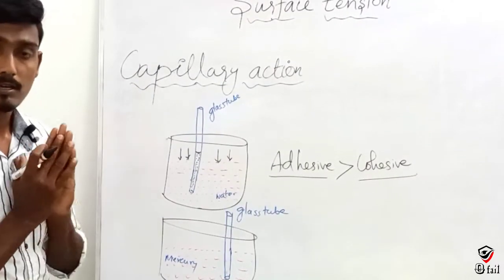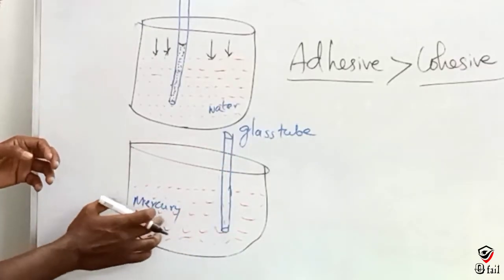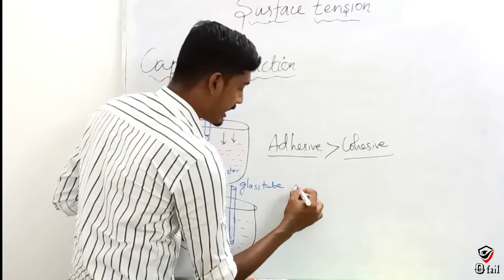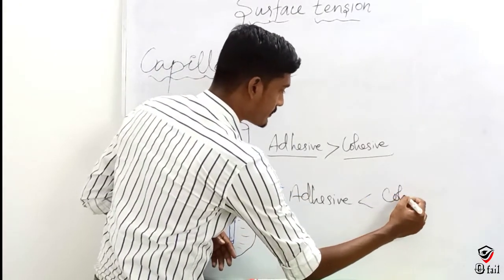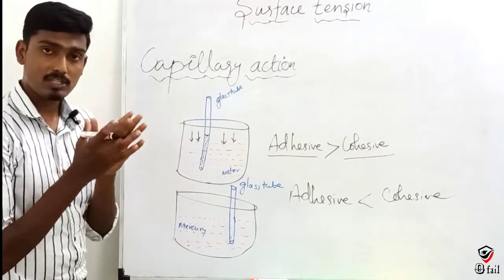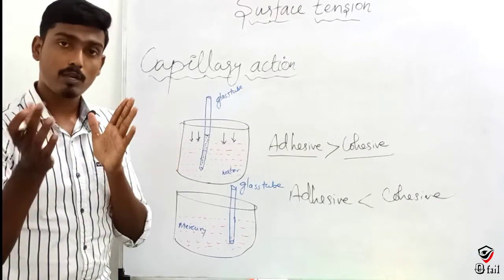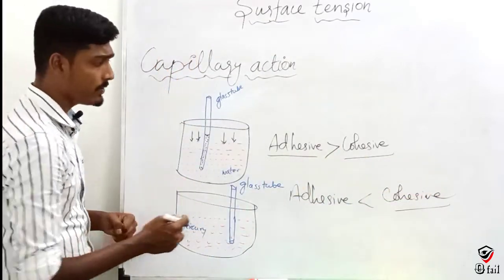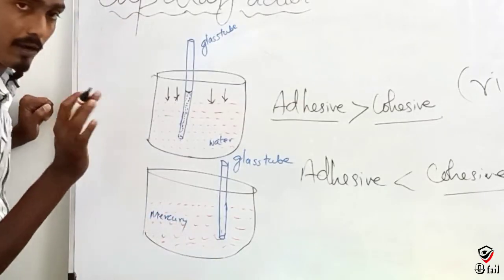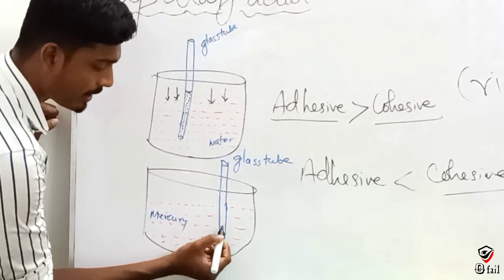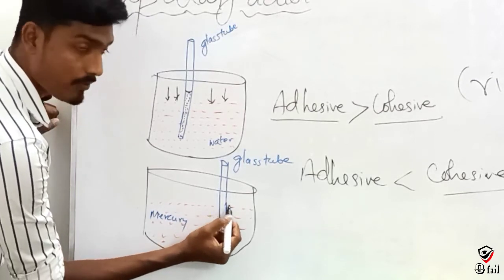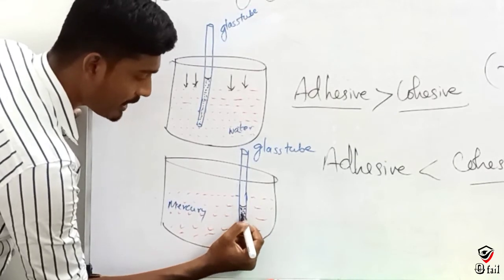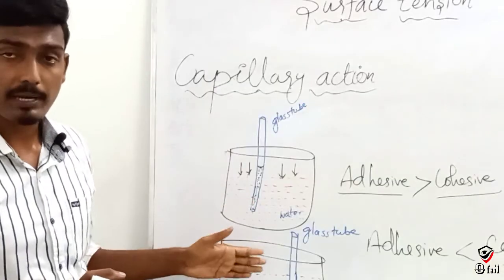Next is capillary fall. If we use mercury instead of water, mercury's adhesive force with the tube is less than its cohesive force between mercury molecules. So when the tube is inserted into mercury, the mercury level inside the tube falls below the outside surface level. This is called capillary fall.